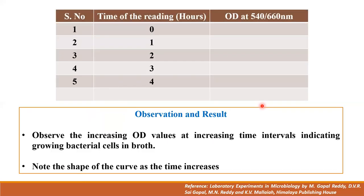When plotting the graph it is dependent on the tabular column and the readings obtained. We can prepare a tabular column with three columns: serial number, time of reading in hours, and optical density at 540 nm or 660 nm measured using a colorimeter.